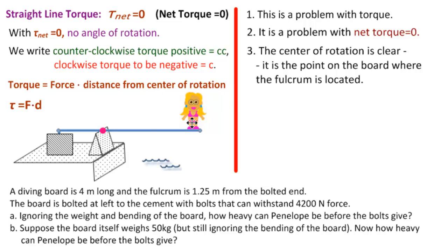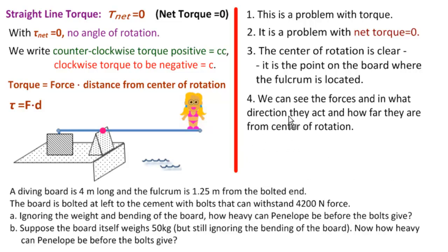We know this force is her weight. This force is the strength of the bolts. So we can see the forces, Penelope, the bolts, and eventually the weight of the board. In what direction they act. This one acts down. This one acts up. The board will act down too. And how far each of these are from the center of rotation.